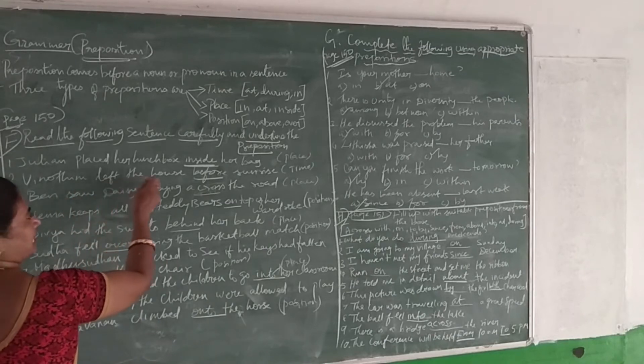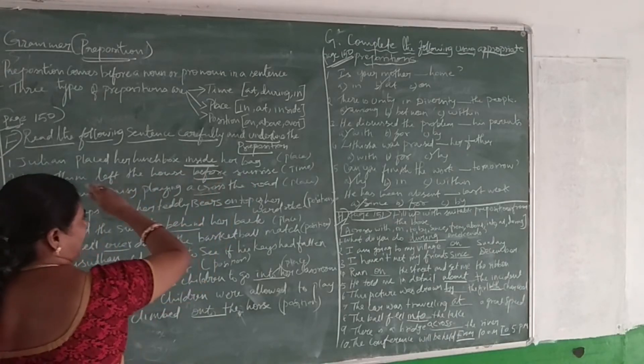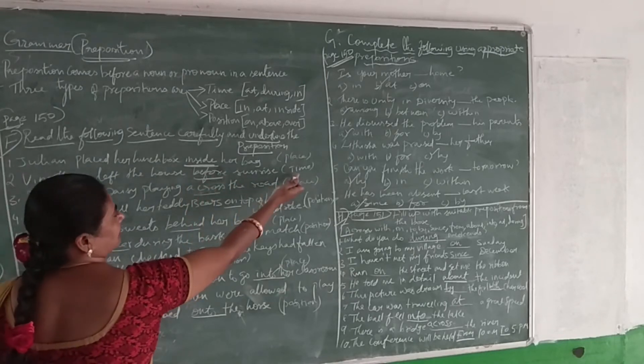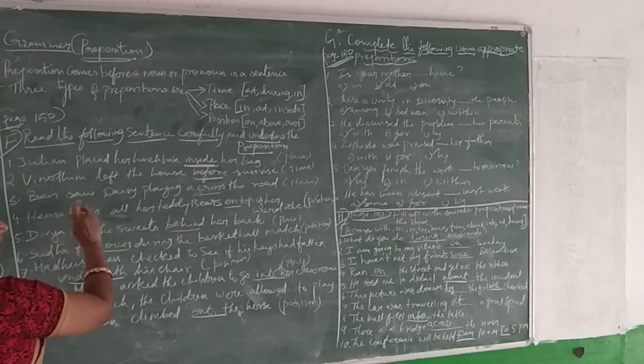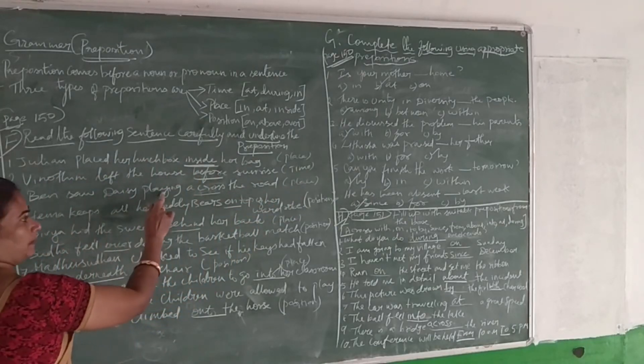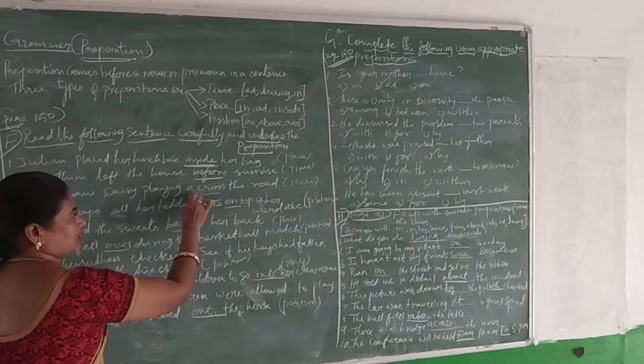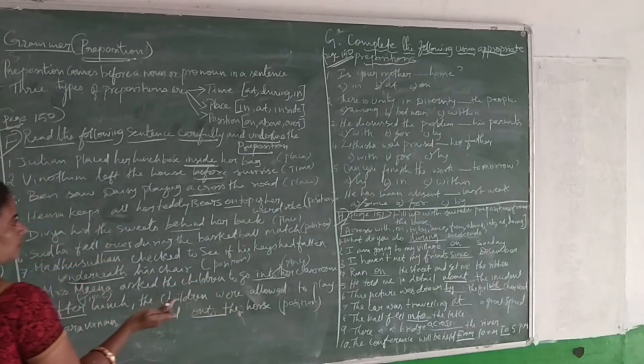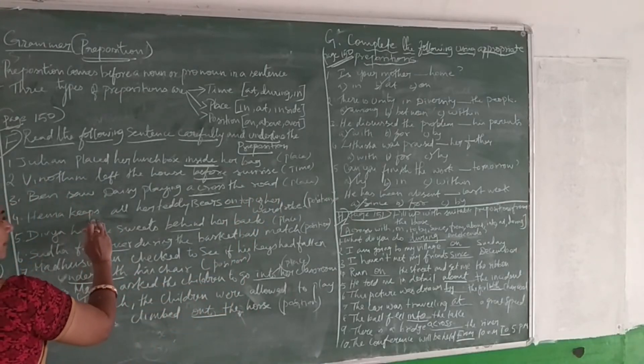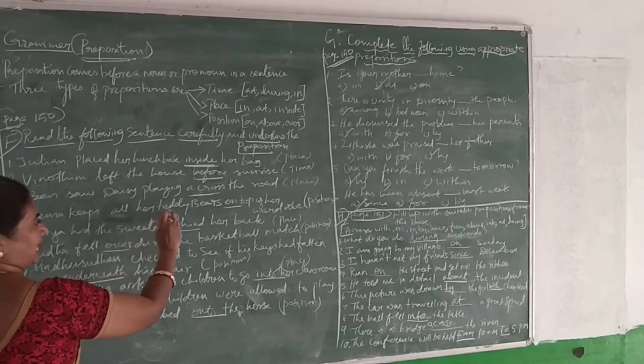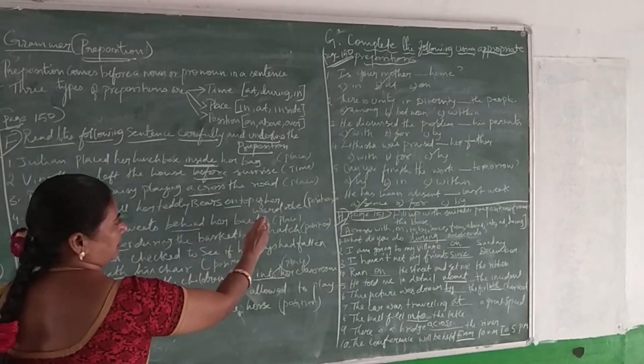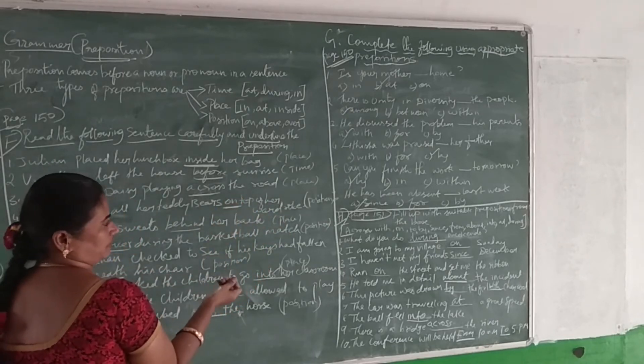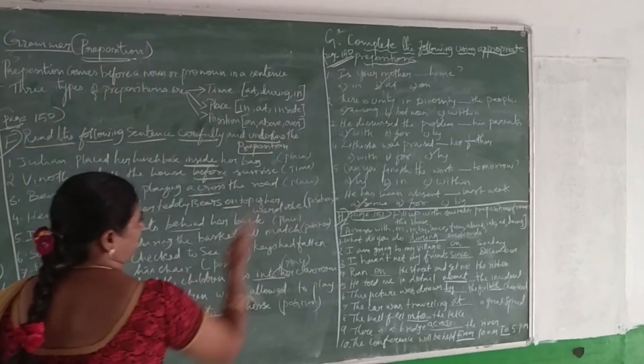Next one is, 'We left in the house before sunrise.' 'Before' is the preposition word, it denotes time. Next: 'They saw the sea playing across the board.' 'Across' is the preposition word which denotes place preposition. 'Karen sits on top of one row.' Here 'on top of' is the preposition word which denotes position preposition.